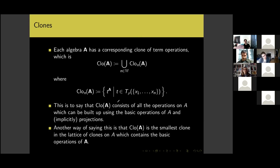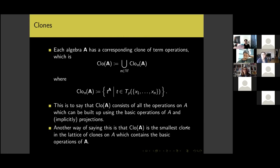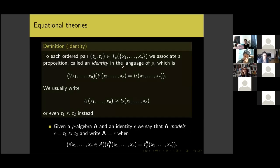Each algebra has a clone associated with it: the union of all Clo_n(A), where Clo_n(A) is all term operations of arity n induced by terms in the appropriate signature. That's essentially all the n-ary operations you can make by composing the basic operations of the algebra. The clone of A is actually the smallest clone in the lattice of clones on A that contains the basic operations of A.